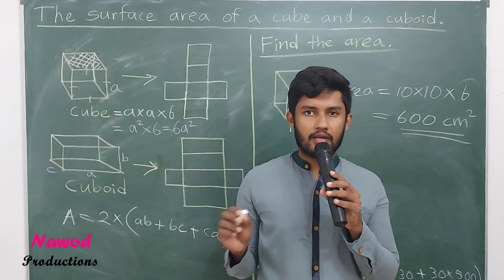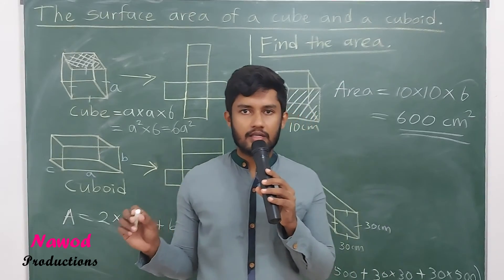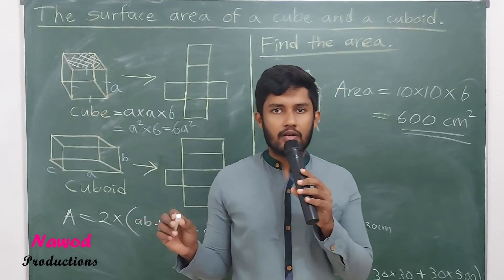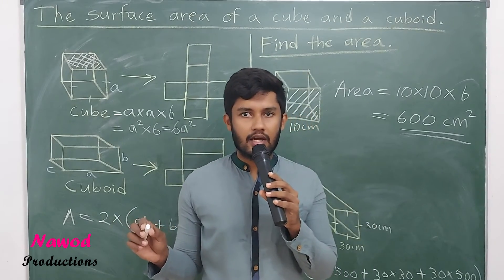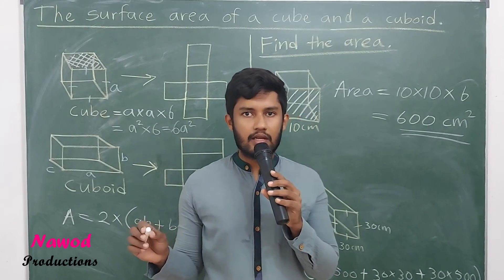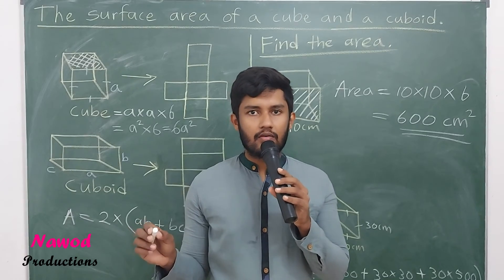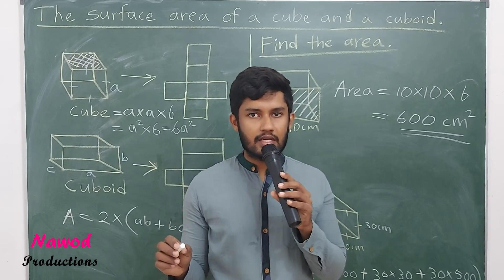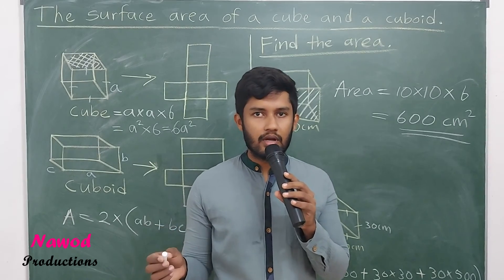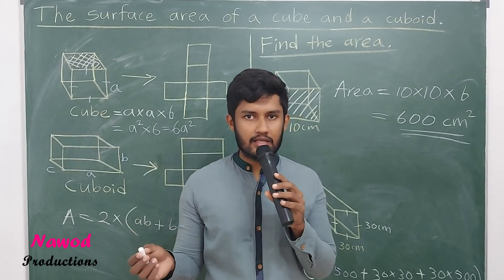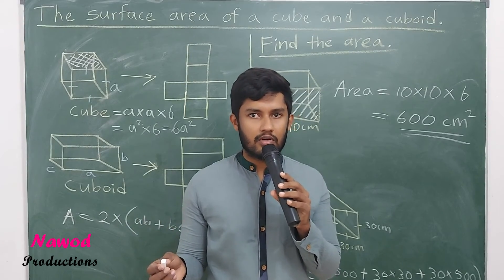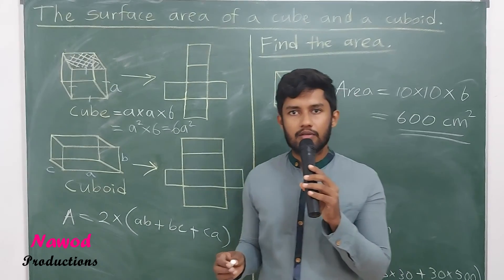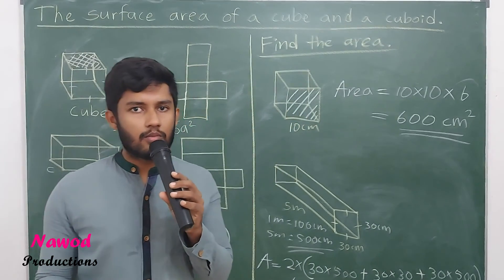In summary: the surface area of a cube is found by multiplying one face's area by six. The surface area of a cuboid uses the formula 2(ab + bc + ca), because there are three pairs of opposite faces. This is how we find the surface area of a cube and a cuboid.